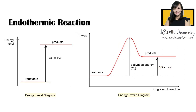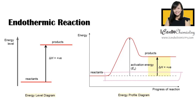For the endothermic reaction, the energy level diagram on the left is something you should already be familiar with. Now for the energy profile diagram of the endothermic reaction, the main differences are the same: the presence of the x-axis representing the progress of reaction, and the presence of activation energy — which is still pointing up. We also add a dotted line extending from the reactants.